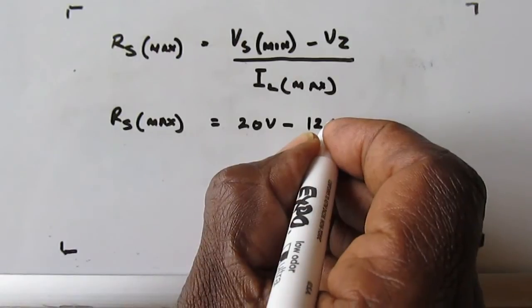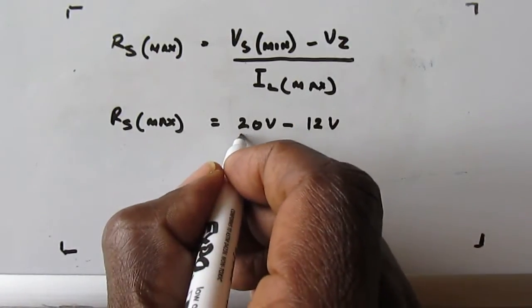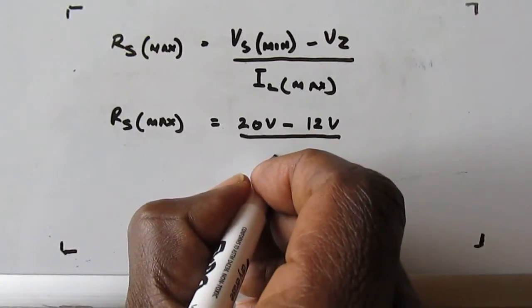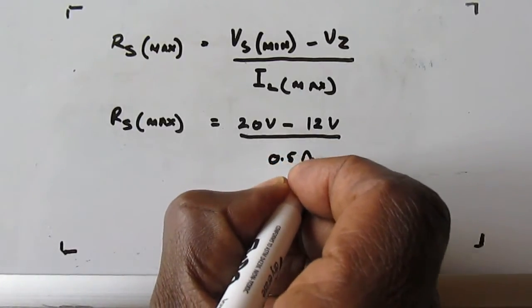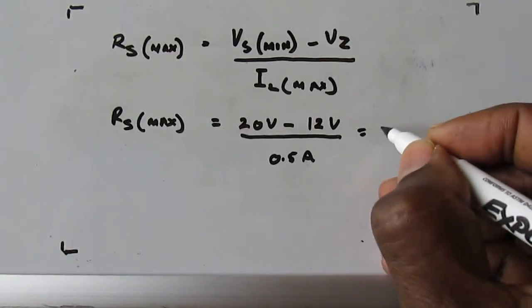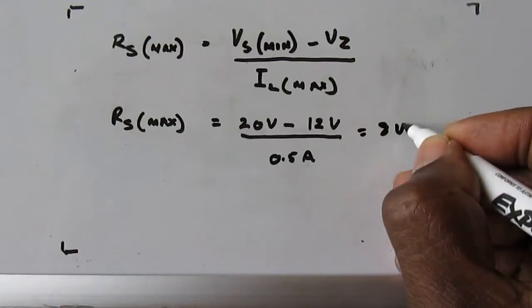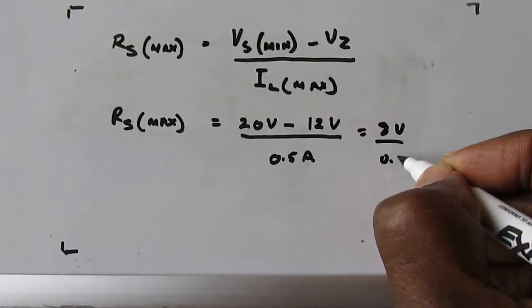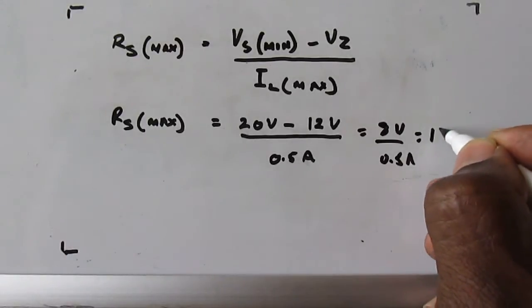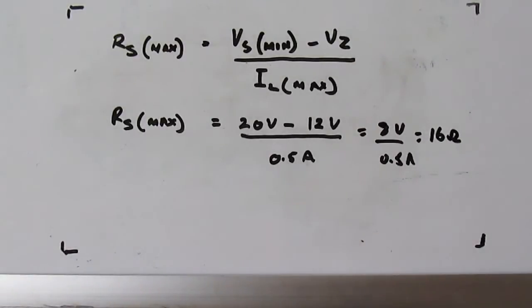Divided by 500 milliamps or 0.5 amps. That gives 8 volts divided by 0.5 amps equals 16 ohms. So your RS value is 16 ohms for this circuit.